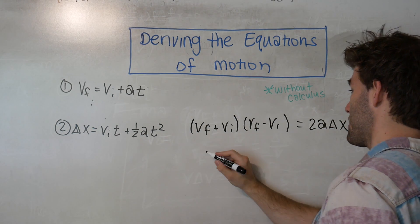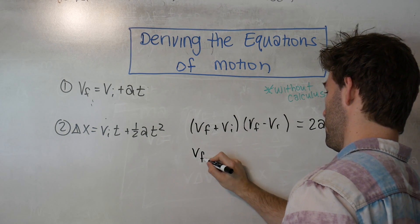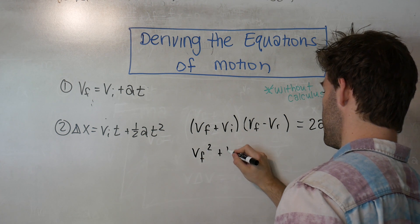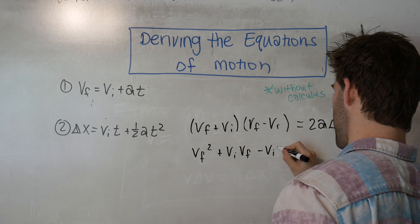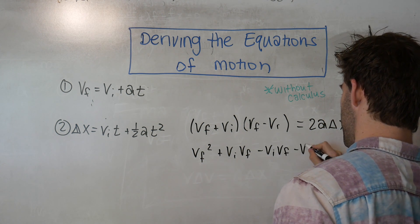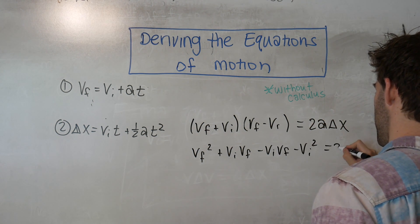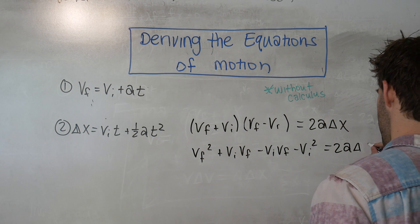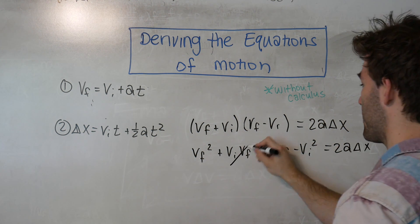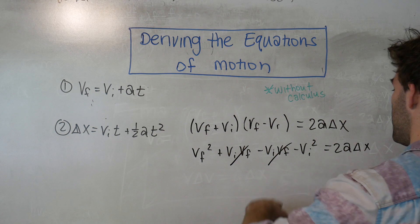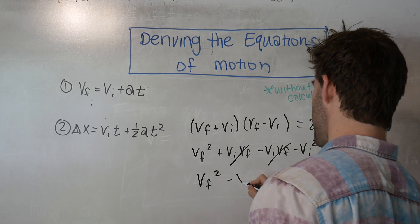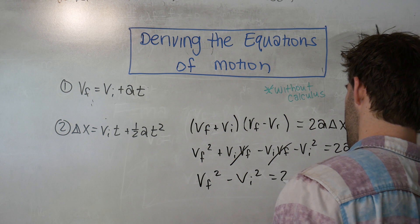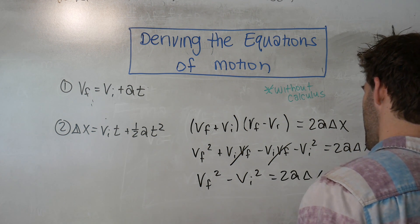And then we just foiled both sides of this equation. The two middle terms cancel because we have positive and negative. And we're left with VF squared minus VI squared is equal to 2A delta X.